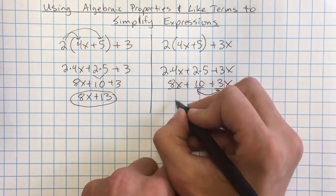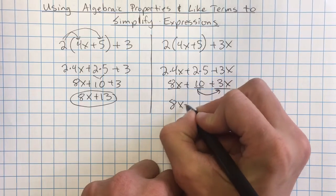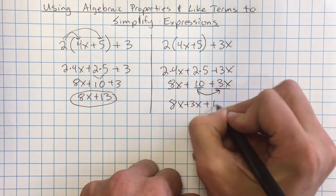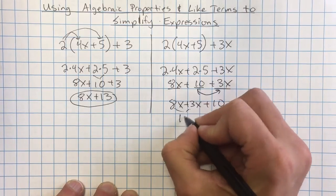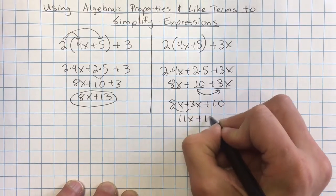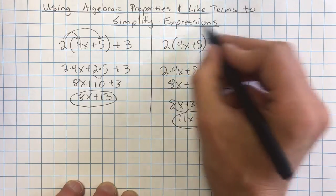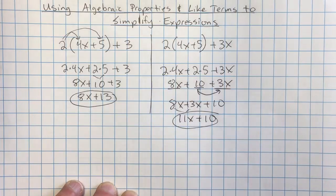We could use the commutative property to tell us that if it's just addition, we're adding these three things together, we can change the order. So I'm going to rewrite this as 8x plus 3x plus 10. And then I can simply add the x's together. That gives me 11x plus 10. And I have simplified again what was a larger problem into a smaller problem.